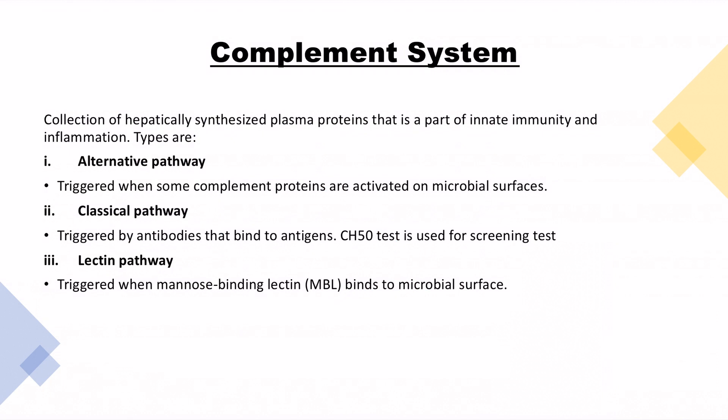So what is a complement system? Complement system is a collection of hepatically synthesized plasma protein that is a part of innate immunity. There are three pathways that we should be aware of for our step examinations: alternative pathway, classical pathway, and lectin pathway.